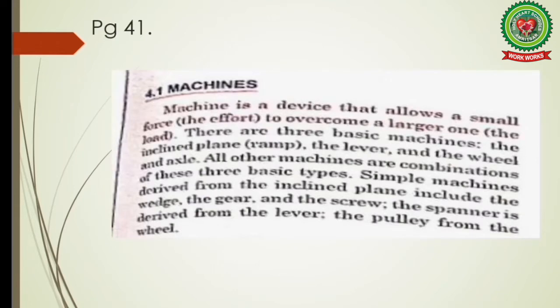Come to page 41. A machine is a device that allows a small force — the effort — to overcome a larger one — the load. There are three basic machines: the inclined plane (ramp), the lever, and the wheel and axle. All other machines are combinations of these three types. Simple machines derived from the inclined plane include the wedge and the screw; the pulley is derived from the wheel and axle.